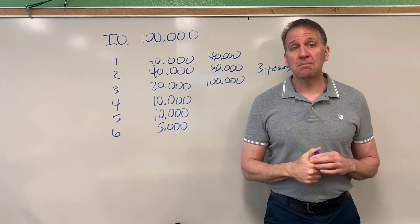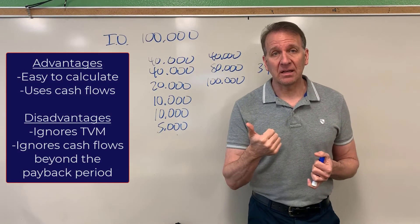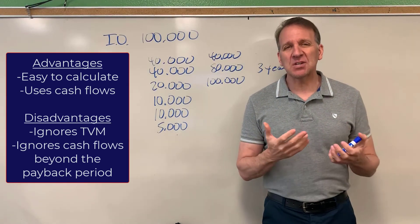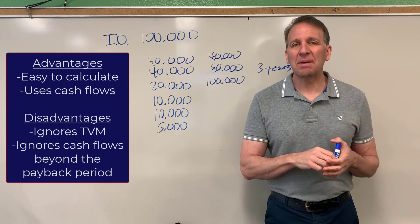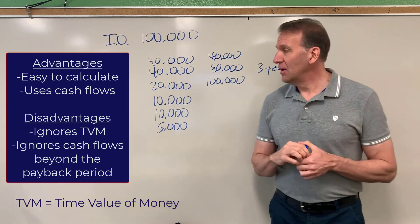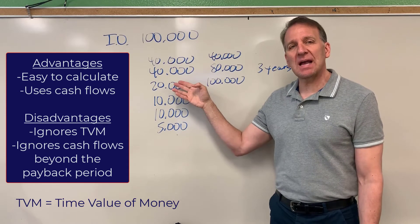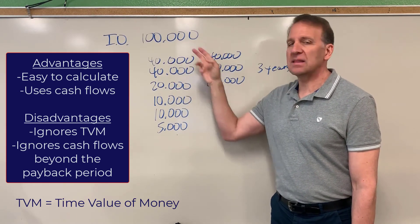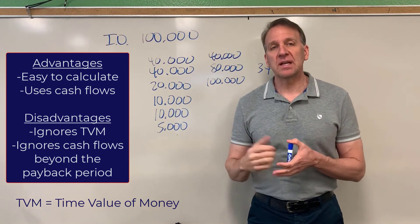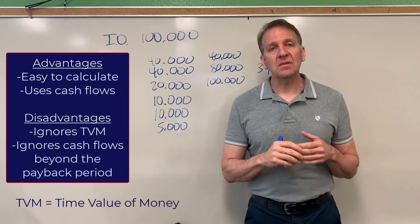Before we move on to the next method, let's look at some characteristics of the payback period. First, it's really easy to calculate — if we've got our cash flows and the cost, it's very easy. And we're using cash flows, so we'll know exactly when we'd get paid back. One disadvantage is that it ignores the time value of money. We're treating $20,000 in future years as equal to $20,000 in today's dollars, but in reality those future dollars are worth less. Payback period ignores that — we use the cash flows strictly and don't discount them or convert them into today's dollars. Later videos will cover methods that do make that conversion.